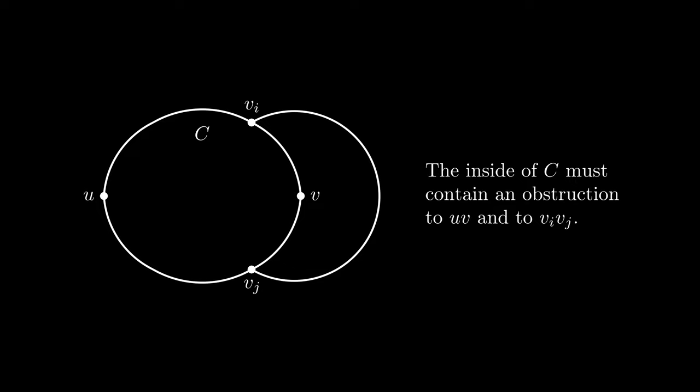In order to block uv from being drawn inside C, we must also have an obstruction on the inside of C. This obstruction also has to block vi vj from being drawn inside of C since otherwise we could just draw it inside and draw uv on the outside.